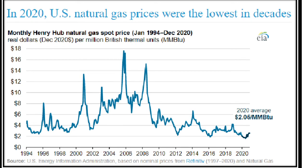In 2005, the next spike occurred due to Hurricane Katrina in the Gulf of Mexico. The Gulf of Mexico is crucial to the natural gas market as it is home to 51% of the total US natural gas processing plant capacity. As a result of the hurricane, supplies from the Gulf of Mexico were significantly impacted, causing a drastic rise in price.